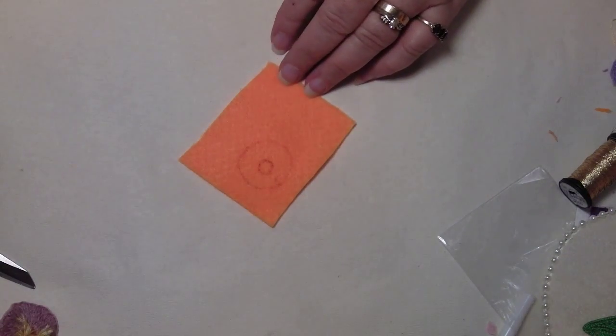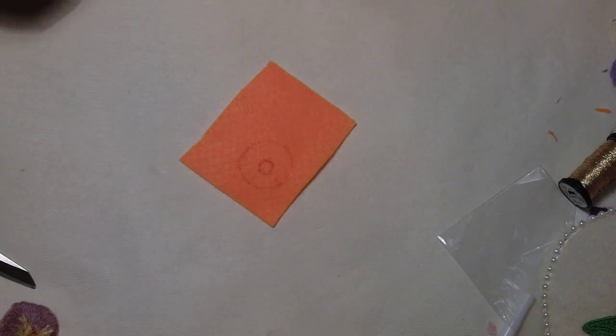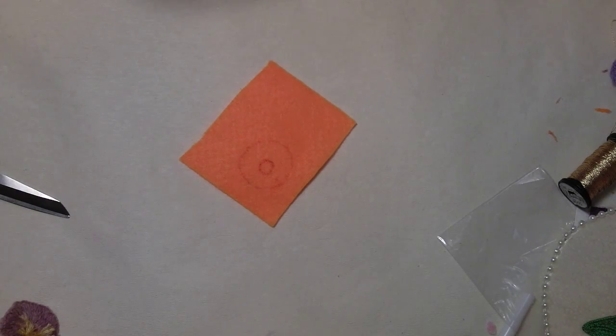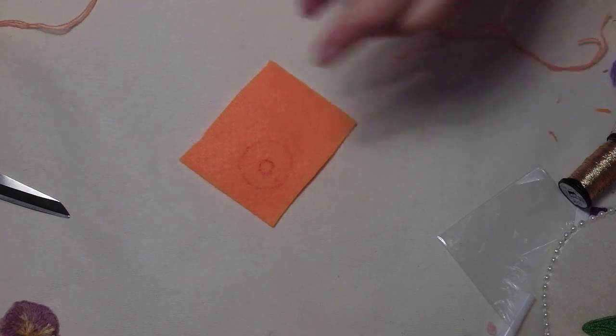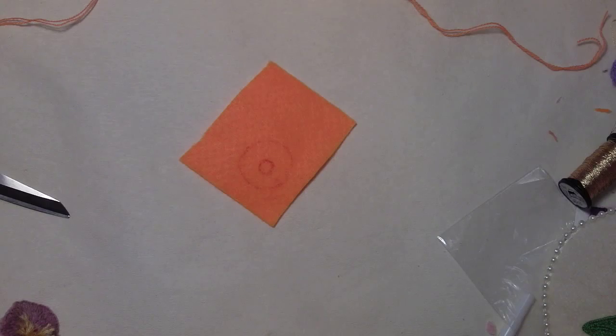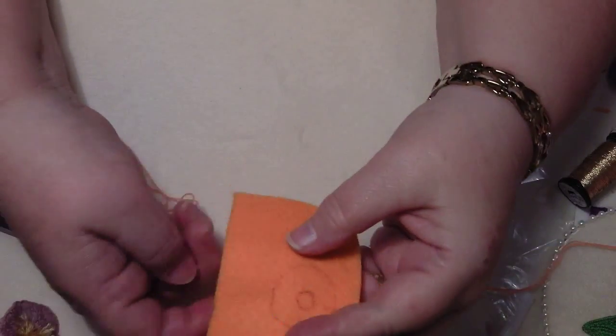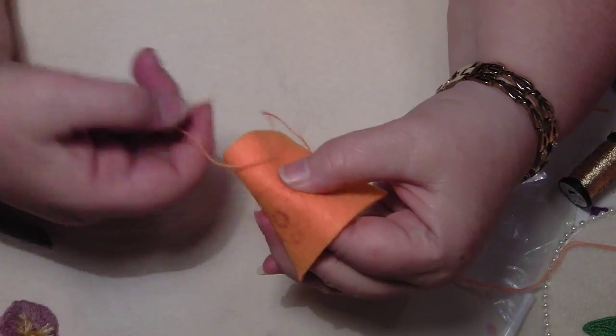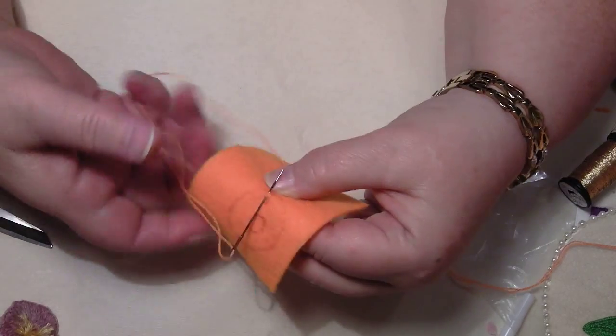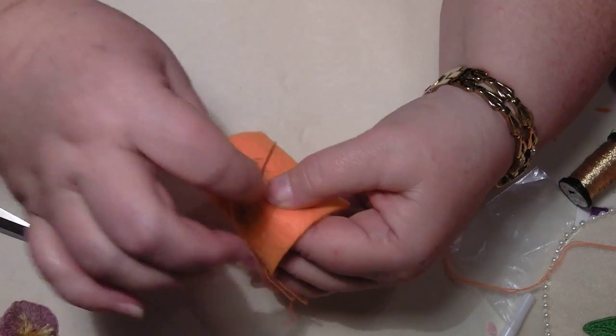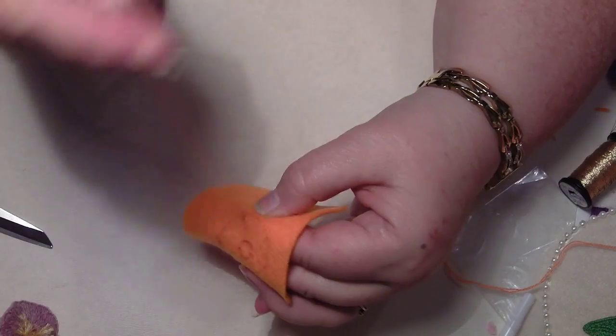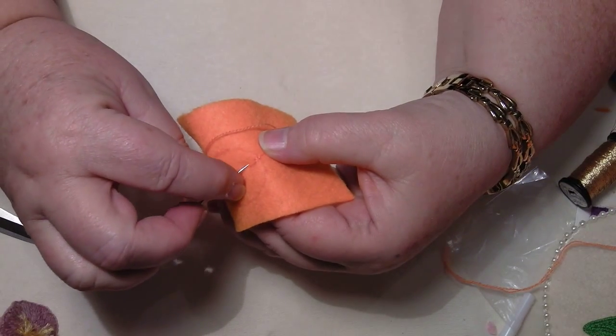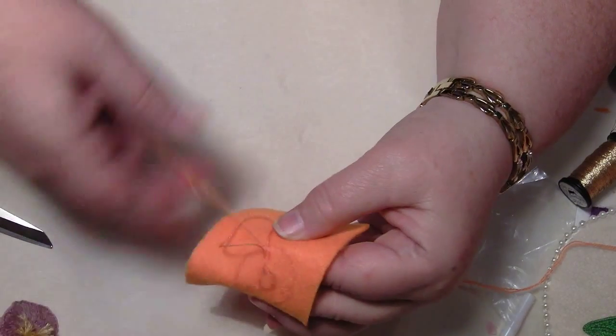So we'll get a needle and thread - I had my needle here, here we go - and we're going to start in the centre there and we're going to do a blanket stitch. Now we're going to do some long, long stitches and some short ones. Go around the edge and fill it in.